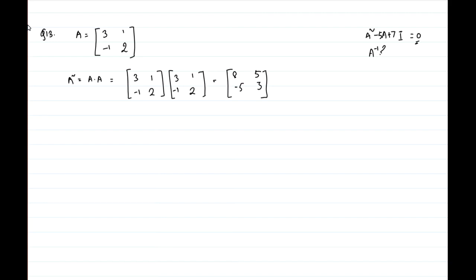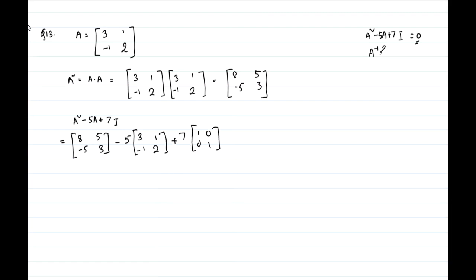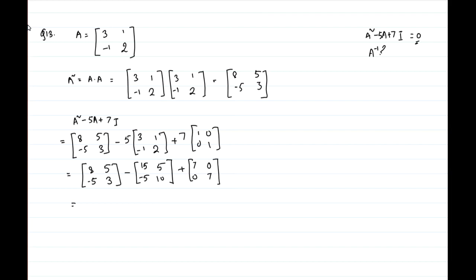Substituting into A squared minus 5A plus 7I: we get [8, 5; -5, 3] minus 5 times [3, 1; -1, 2] plus 7 times [1, 0; 0, 1]. That is [8, 5; -5, 3] minus [15, 5; -5, 10] plus [7, 0; 0, 7]. Computing element by element: 8 minus 15 plus 7 equals 0, and each entry works out to 0. So A squared minus 5A plus 7I equals the zero matrix — hence verified.